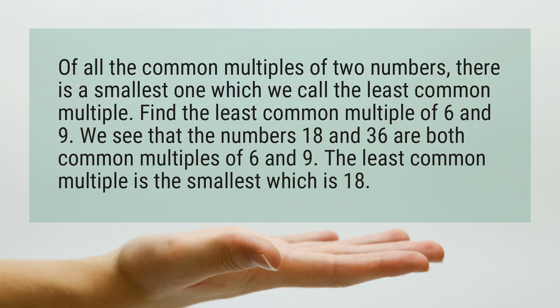Find the least common multiple of 6 and 9. We see that the numbers 18 and 36 are both common multiples of 6 and 9. The least common multiple is the smallest, which is 18.